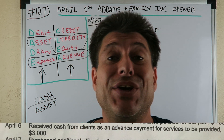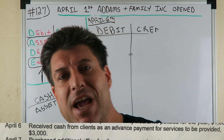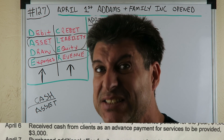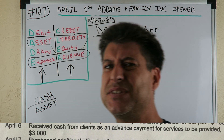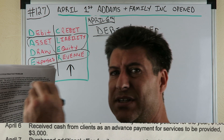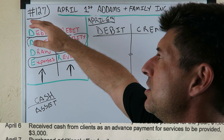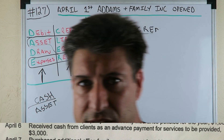CPA Strength here, back again. Strongest in the game. In my classic series, we're doing our journal entries. I believe this is the fourth journal entry in our little series here. This is Accounting for Beginners, number 127 of my classic series.